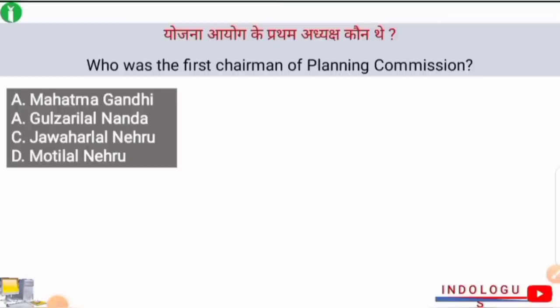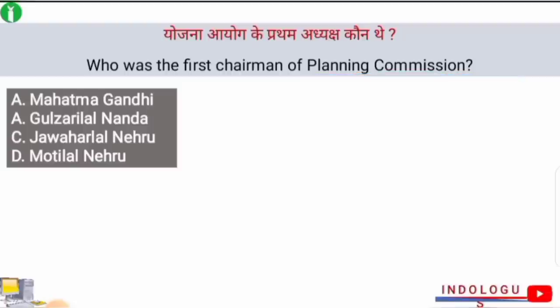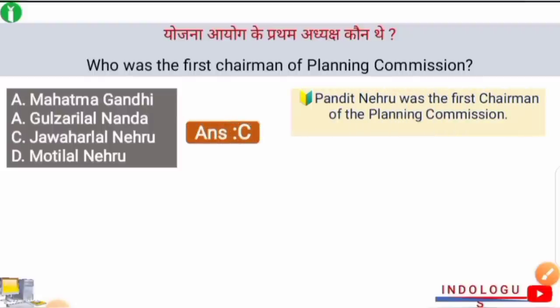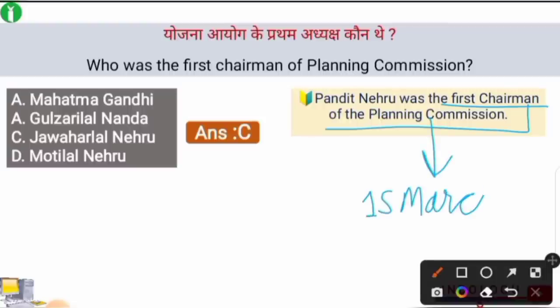Next question: Who was the first Chairman of the Planning Commission? The right answer is option C — Jawaharlal Nehru was the first Chairman of the Planning Commission. Pandit Jawaharlal Nehru was the first Chairman of the Planning Commission, which was formed on 15th March 1950.